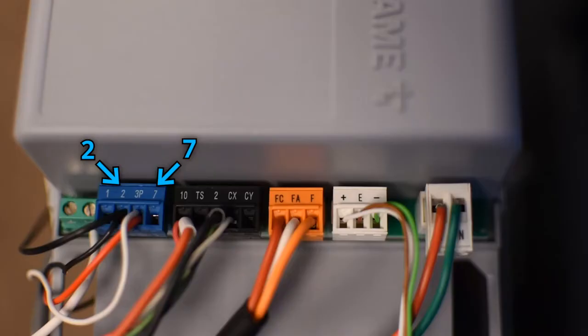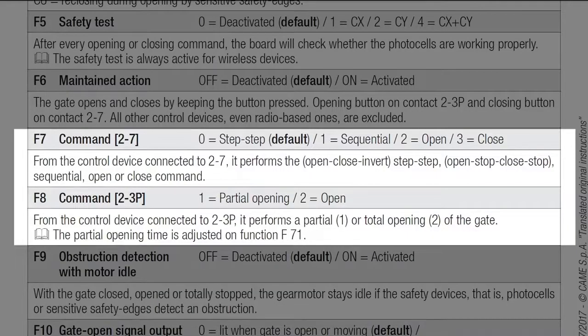To send a command using an external device like a push button, you can use pins 2 and 7 as a normally open contact and select the function you want in F7. Also, the pin 3P can be used and assigned in F8.